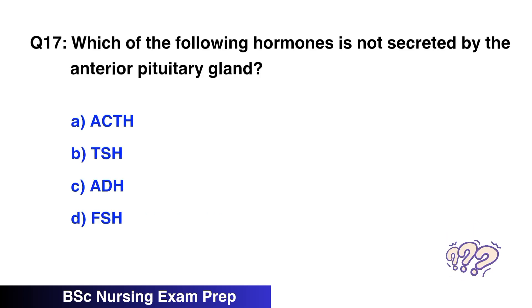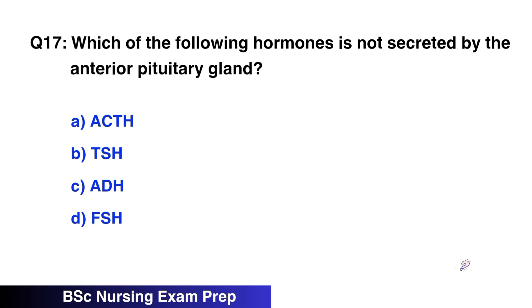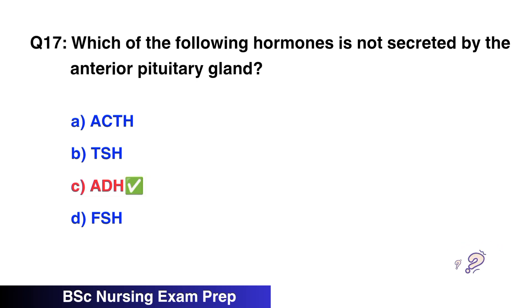Question number 17: Which of the following hormones is not secreted by the anterior pituitary gland? The right option is C, ADH.